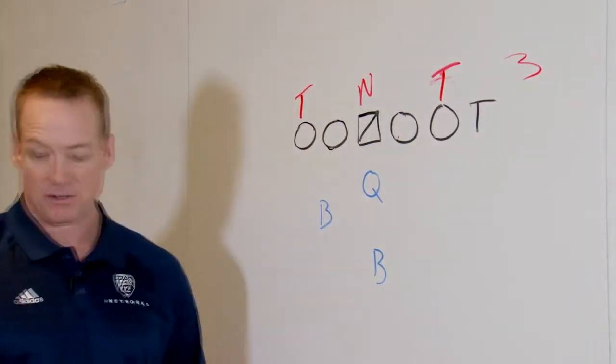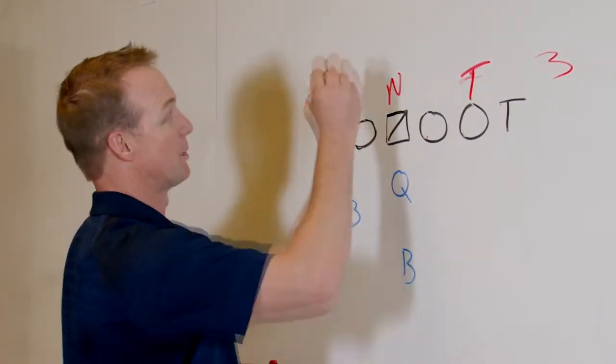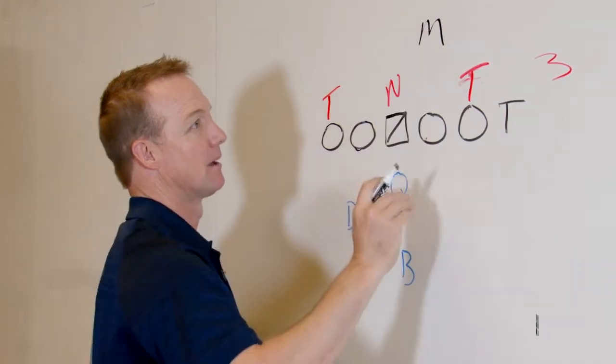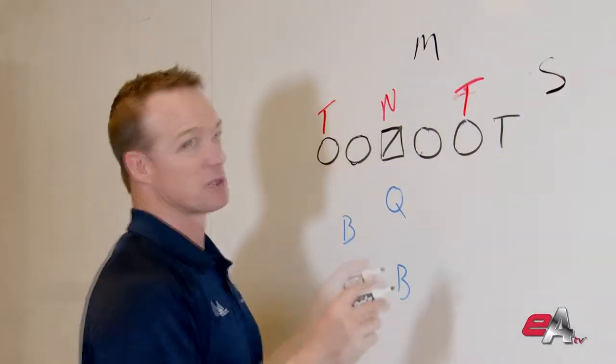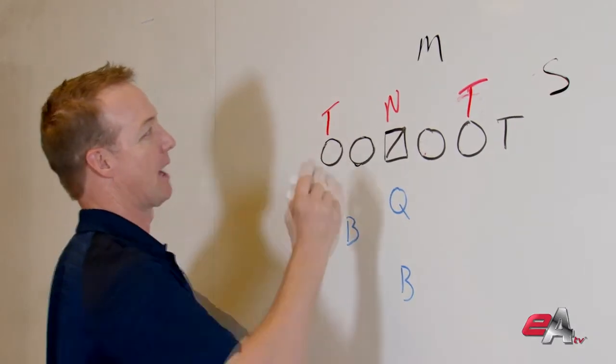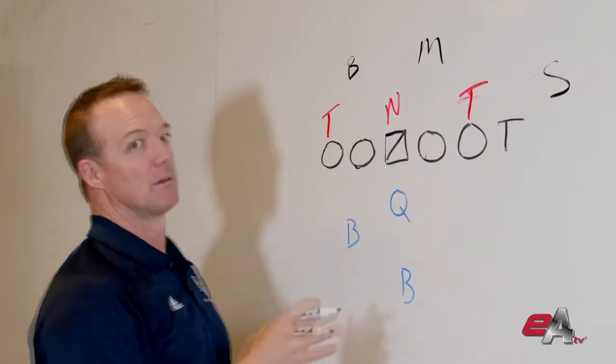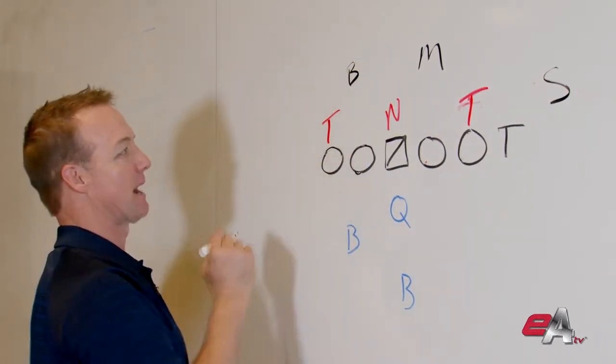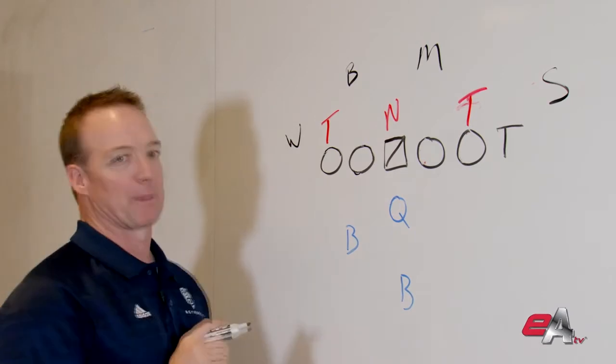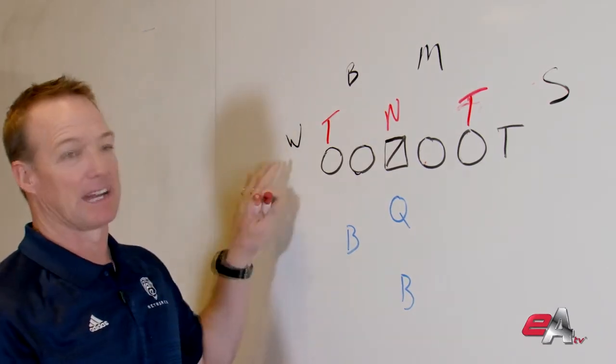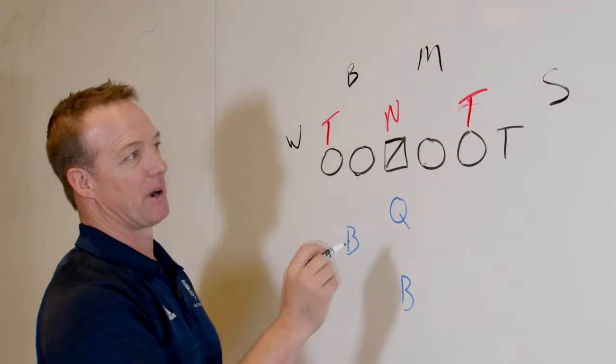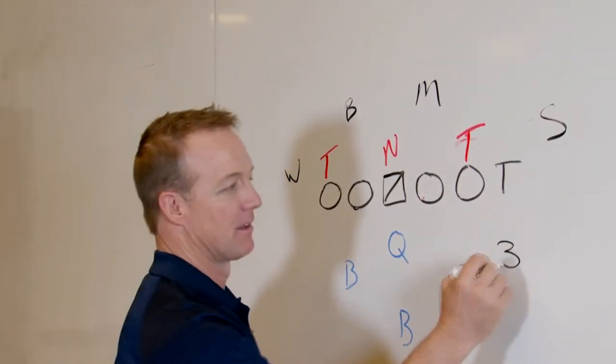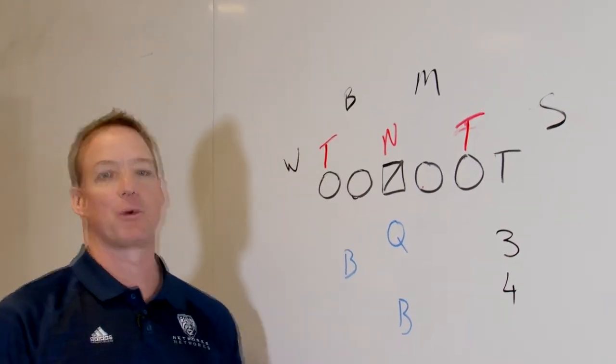Then you come back and your linebacker set, where you have your backers, you'll have Mike, your Sam, your strong side backer, your Bill, Will, there's all kinds of names for it. Your weak side inside backer, and then your whip, your Will, your weak side linebacker. Now that's four linebackers, right? We already talked about it. Three here is your defensive line, four linebackers. That's your 3-4 defense.